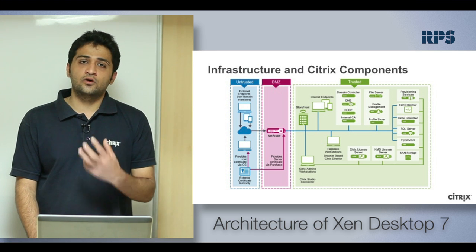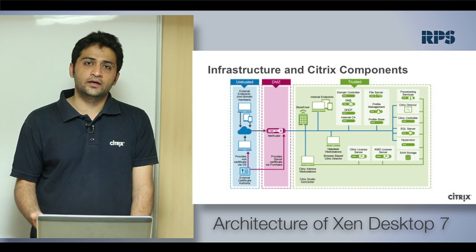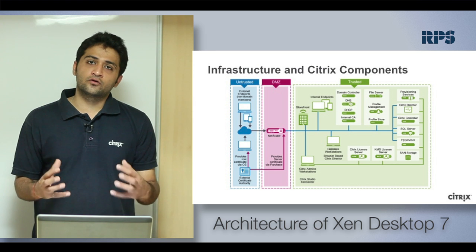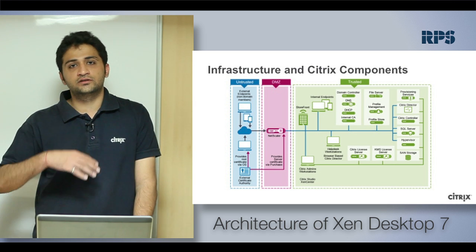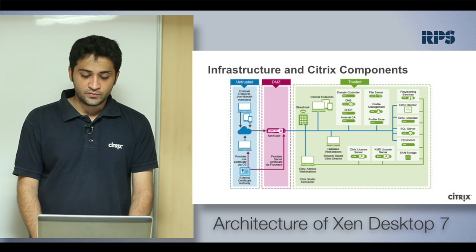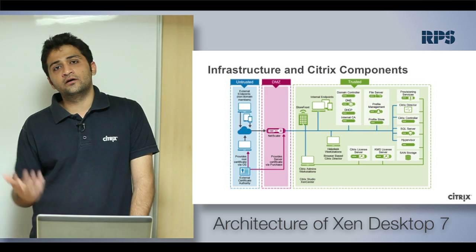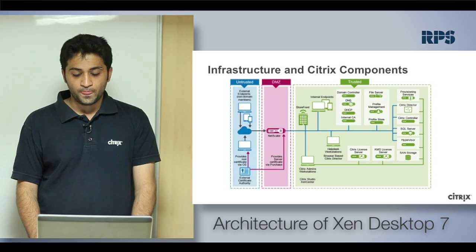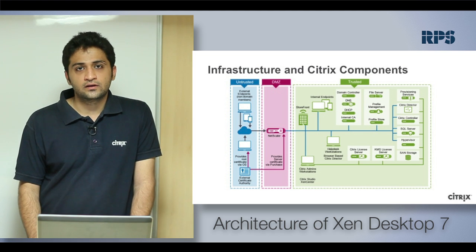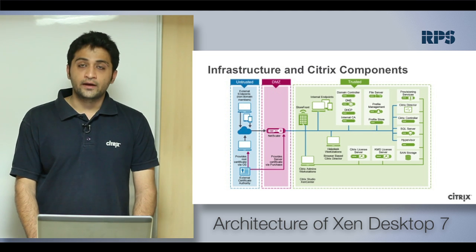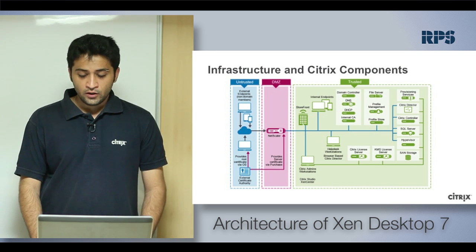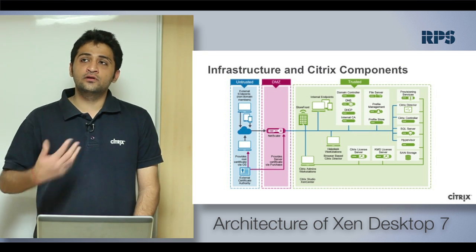You need your Citrix License Server, which maintains and manages all Citrix licenses for different product editions. You need your domain controller where all user and computer accounts are created, policies are configured, and DNS, DHCP, and internal certificate authority can also be installed. You also need profile management solutions and profile stores for managing end user profiles — you can use Citrix Profile Management or Microsoft Roaming Profiles.